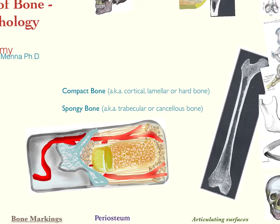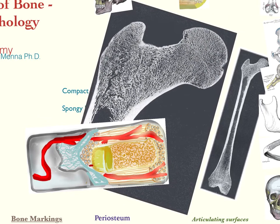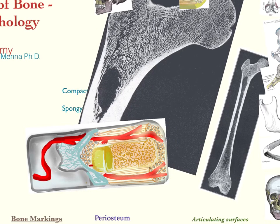Spongy bone, on the other hand, also known as trabecular or cancellous bone, covers all these regions here, which take on a little bit of a honeycomb pattern. Here's an up-close shot. As you can see, it's open — when these bones are dry, it's an airy matrix, which is very different from the cortical bone, that tough, hardened bone.